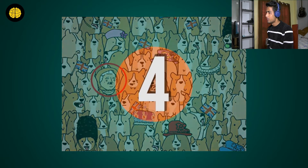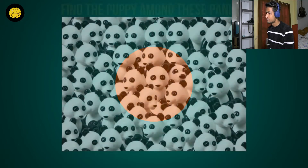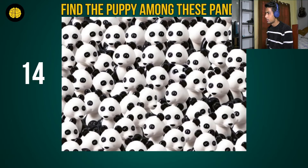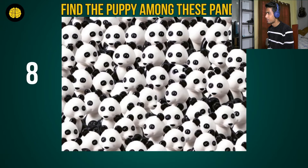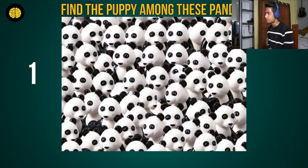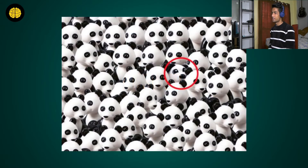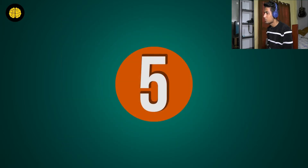Let's move ahead to number four: find the puppy among these pandas. Let's see — I think I got it, it's right in the middle. The answer — I was right! That's a close one; you can see all the pandas were exactly the same.